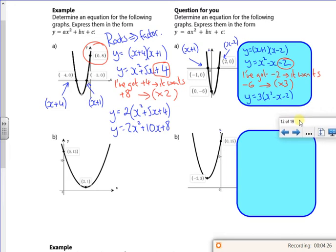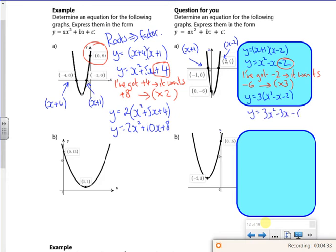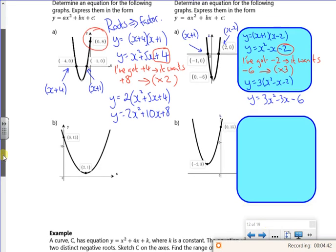Hopefully with a one for you, you realize that you have to times it by 3. So you get 3x squared minus 3x minus 6. So that's that example. That's quite straightforward, isn't it? So you'd use the roots and then use the y-intercept.